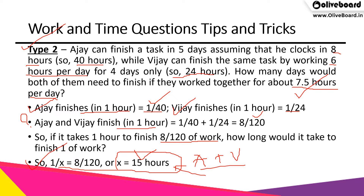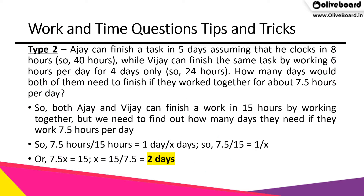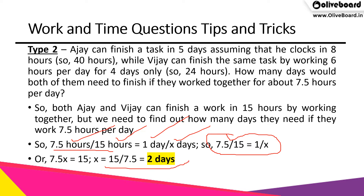They need 15 hours to work together and finish the job. If in one day they work 7.5 hours, we cross multiply: 15 divided by 7.5 equals two days. So they need two days if they work together for 7.5 hours each day. This is the second kind of question. If anything is unclear, please leave a question in the comments.